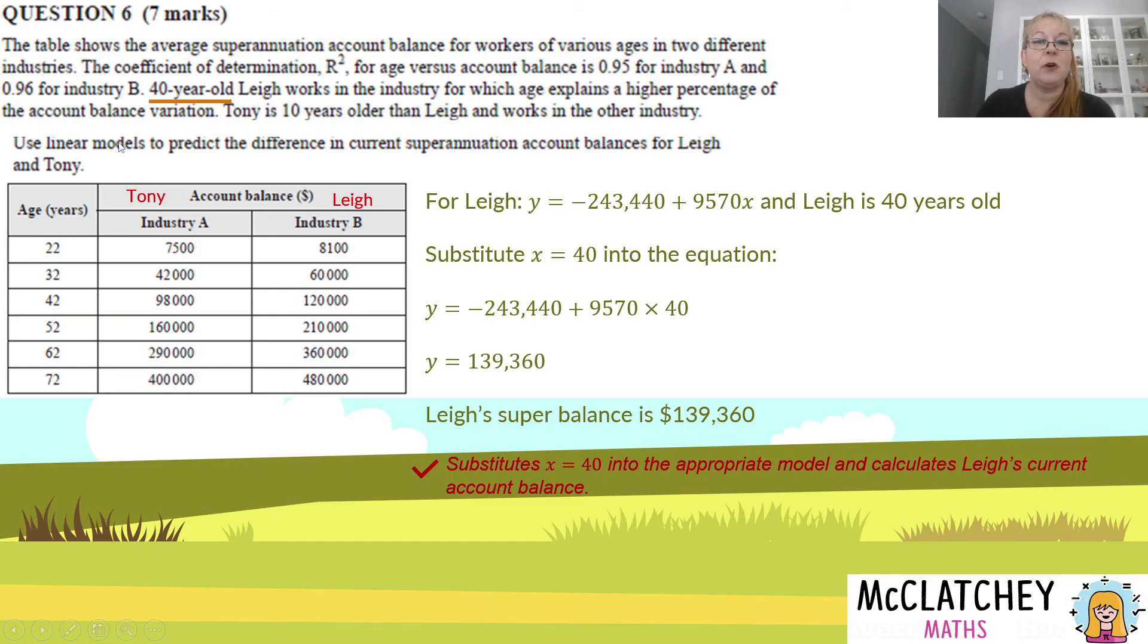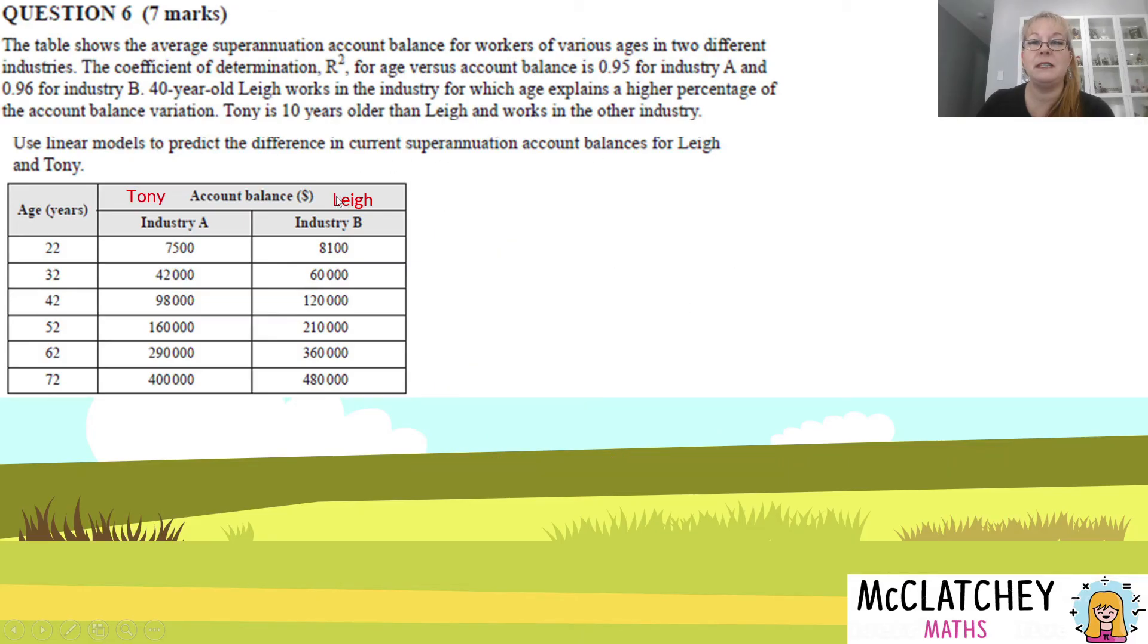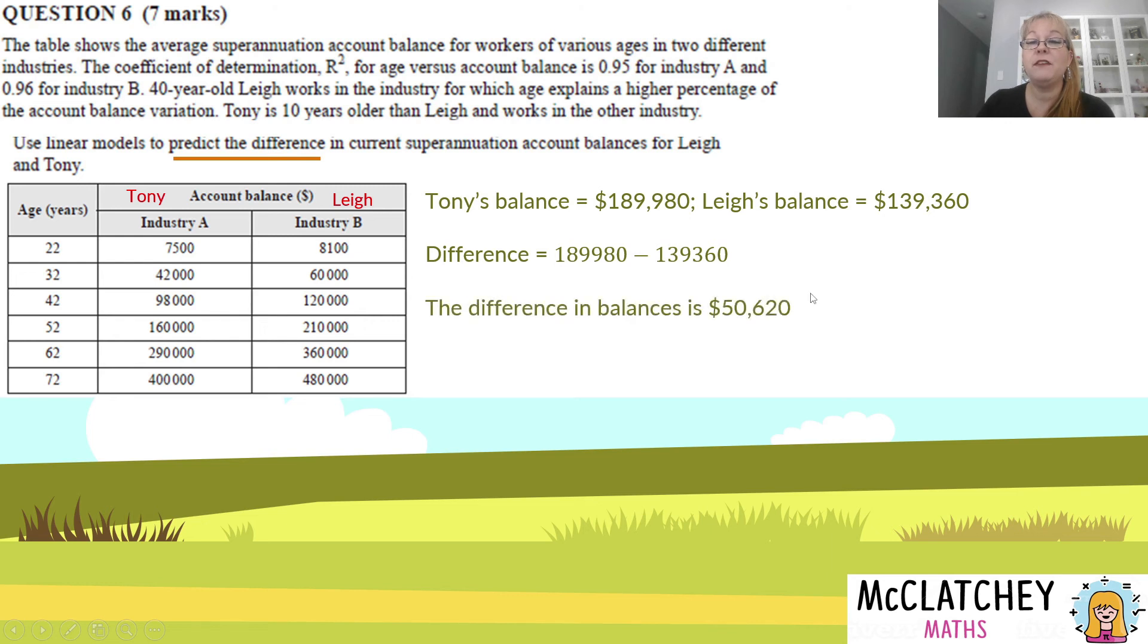We've used linear models to predict the current account balances, but we haven't predicted the difference. Now we need to do that prediction. We've got the two balances here. Difference means subtraction. Let's take them away and we get $50,620. We've achieved our next mark for calculating the difference in those current account balances for Tony and Lee.